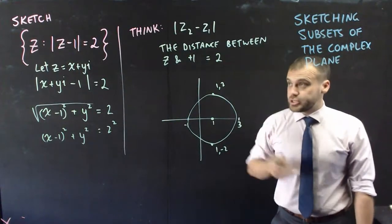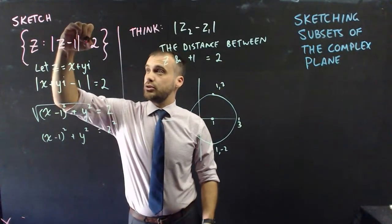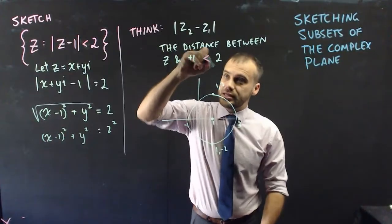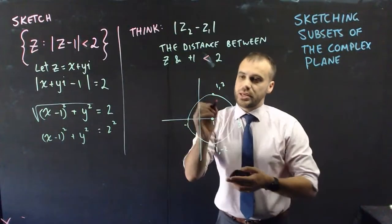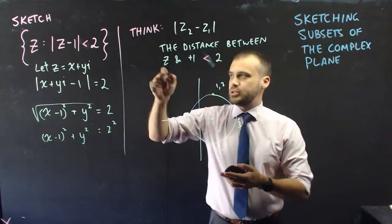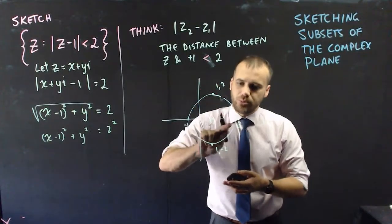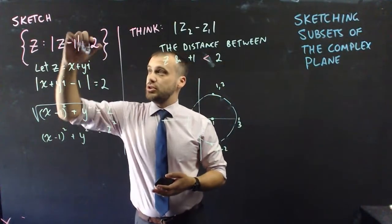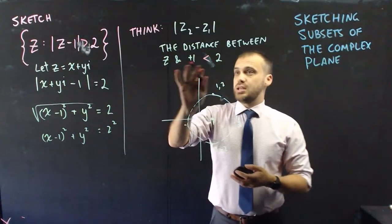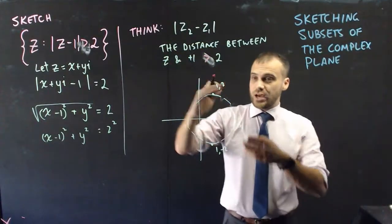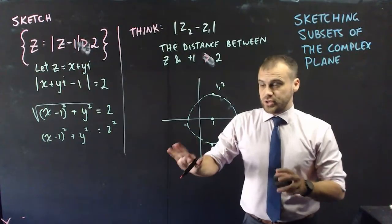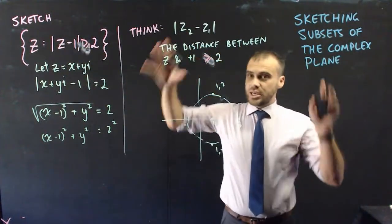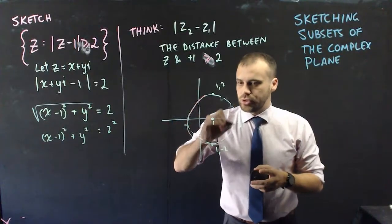There are a few variations. If it's less than 2, the distance is less than 2, meaning we're inside the circle — and we'd use a dotted circle since the boundary isn't included. If it's greater than 2, we shade outside the circle with a dotted boundary. If it's greater than or equal to 2, we shade outside with a solid circle.